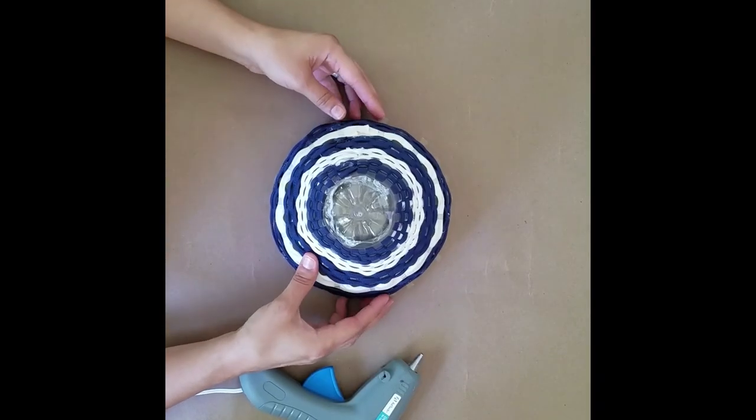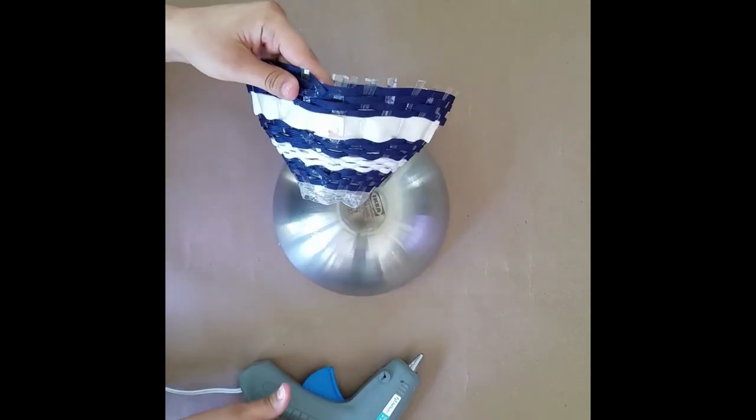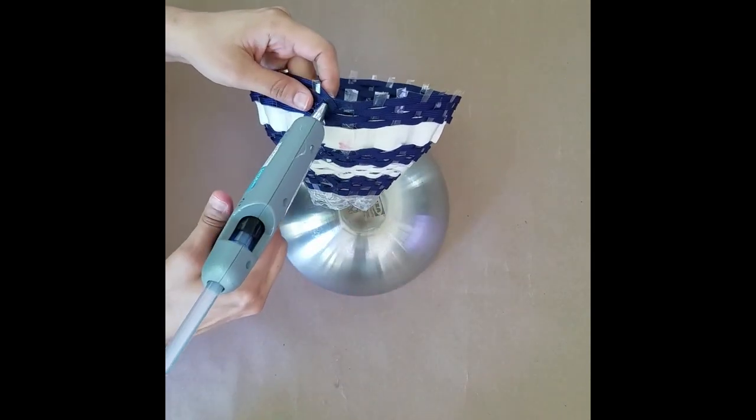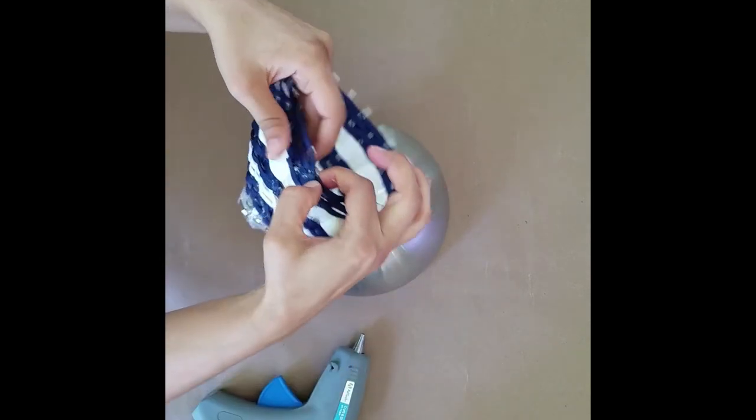Now step five, once you've woven your materials through to the end of your bottle, you can pick it up off your bowl and apply just a little bit of glue to the end. Secure your ribbon.